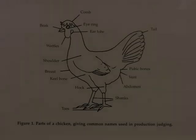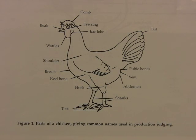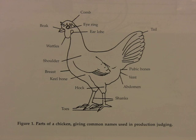First, students should review the FFA manual to become familiar with the chicken anatomy so that they will be familiar with the parts of the chicken that must be examined. This includes the comb, beak, wattles, breast, keel bone, hock, shanks, toes, abdomen, vent, tail, and wing feathers.